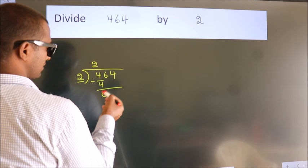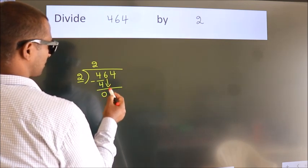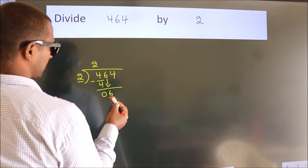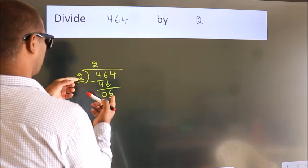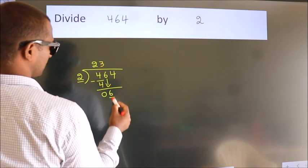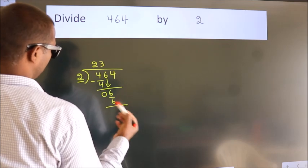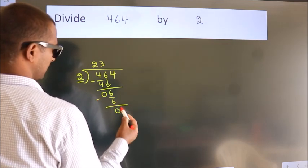After this, bring down the beside number. So 6 down. So 6. When do we get 6? In 2 table. 2 3's 6. Now we subtract. We get 0.